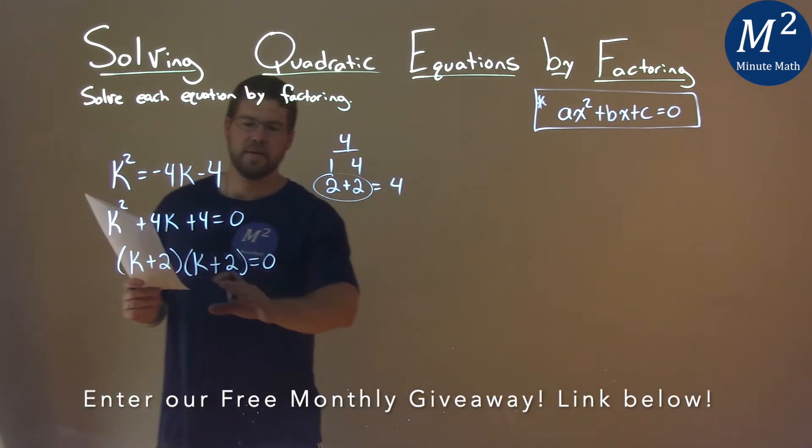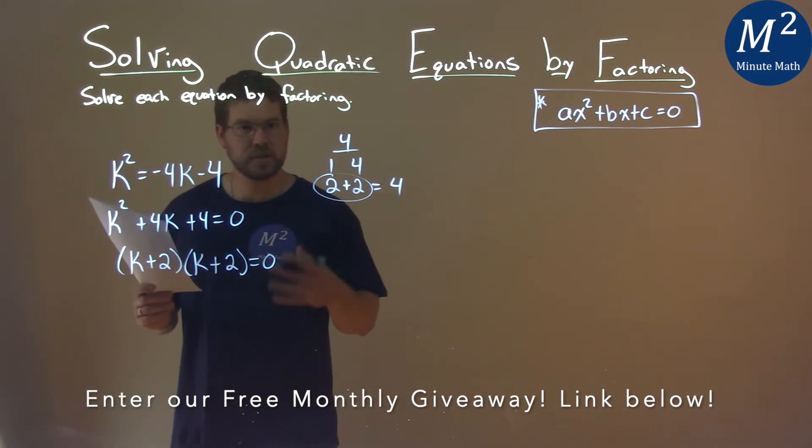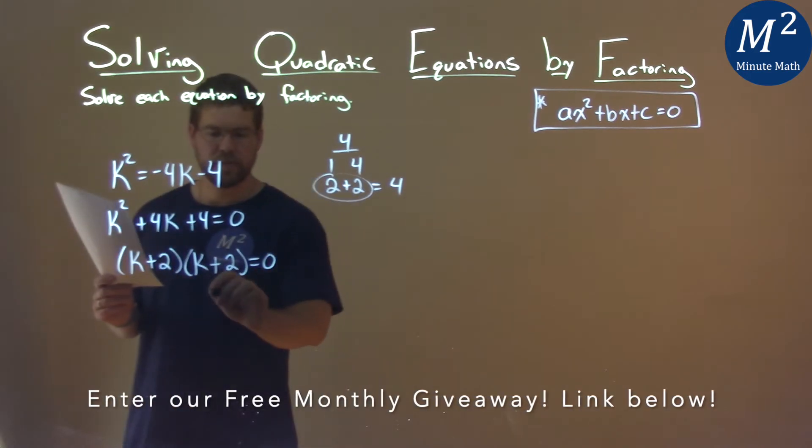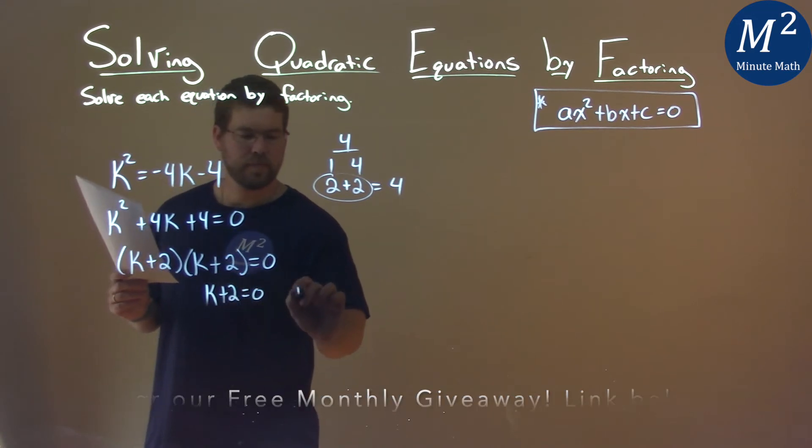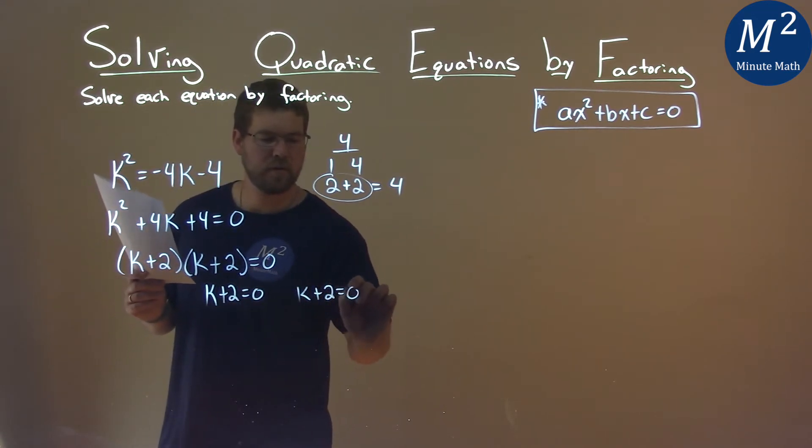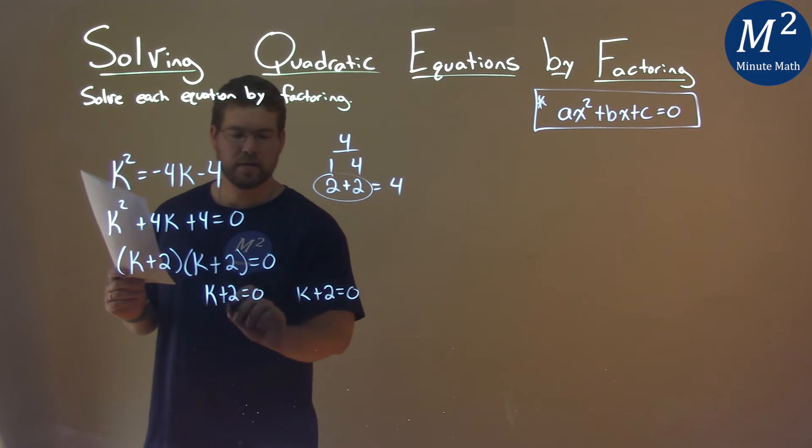So now our rules state that we set each part of these individually equal to 0 and solve. So k plus 2 equals 0. k plus 2 equals 0. Subtract the 2 from both sides.